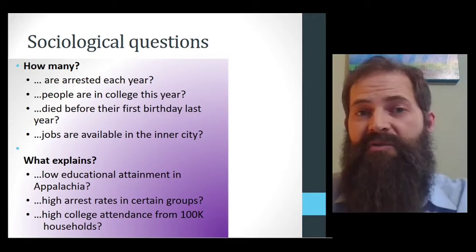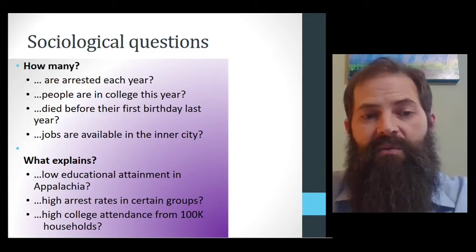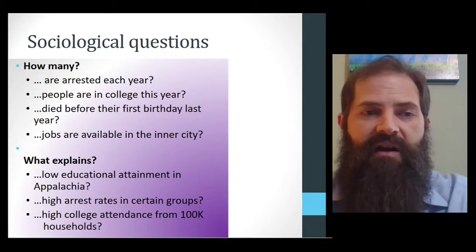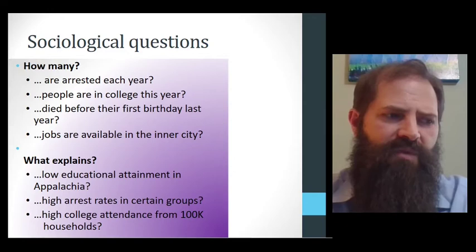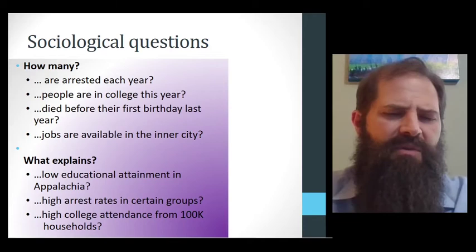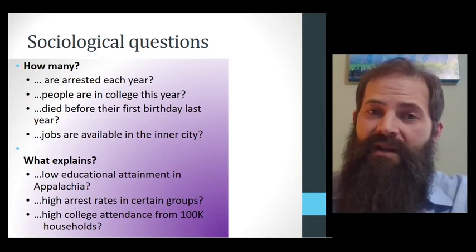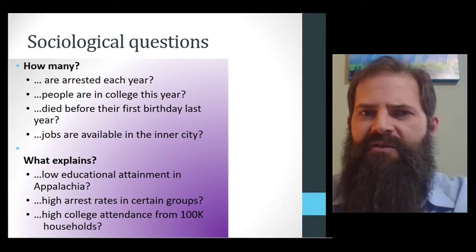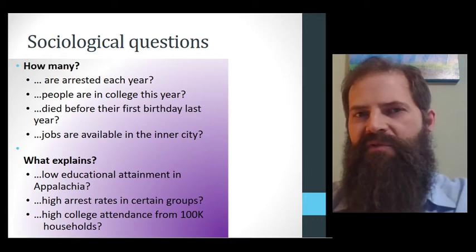Alternatively, maybe we're trying to explain ideas, not through numbers but through words. Maybe trying to explain what explains this low educational attainment that we find in Appalachia. People often aren't going to college, they also have higher high school dropout rates. What might explain a higher arrest rate amongst a certain group? Even though there's a number there, we're trying to maybe explain what that means and what explains that experience. Or maybe what explains the number of college attendees who come from $100,000 households is higher than those households below that. These are some basic sociological questions, but we're splitting them up into two categories because we can go about different ways of answering them.